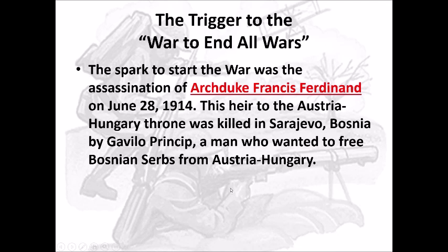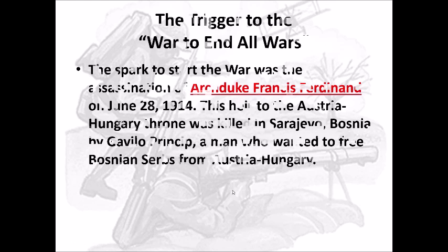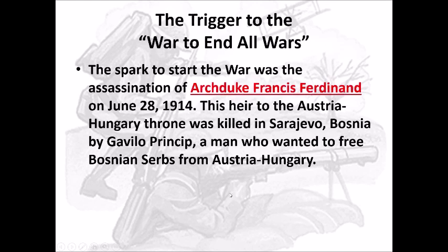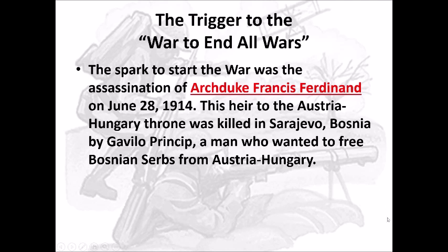That set everything into motion. Austria wanted to get revenge for the death of their archduke and were going to attack the Serbians. The Russians, again — Serbians are Slavic people — wanted to protect them and came into the war. Then all those alliances went into effect as countries backed up their allies, and that was the start of the war.